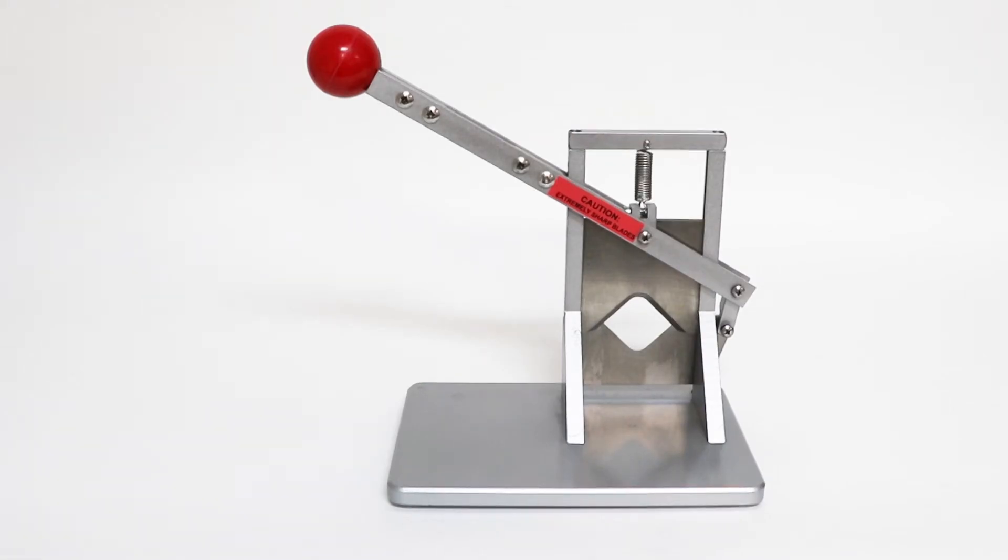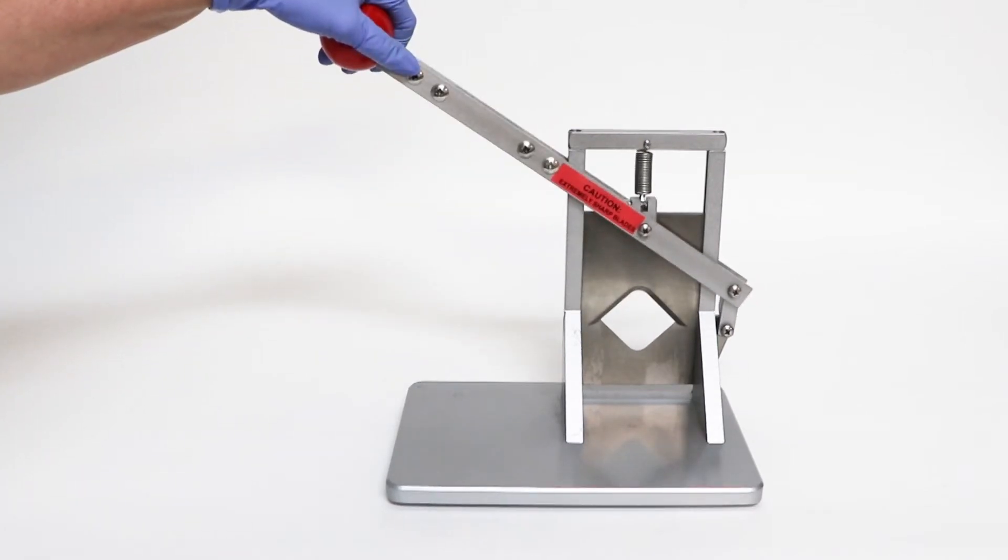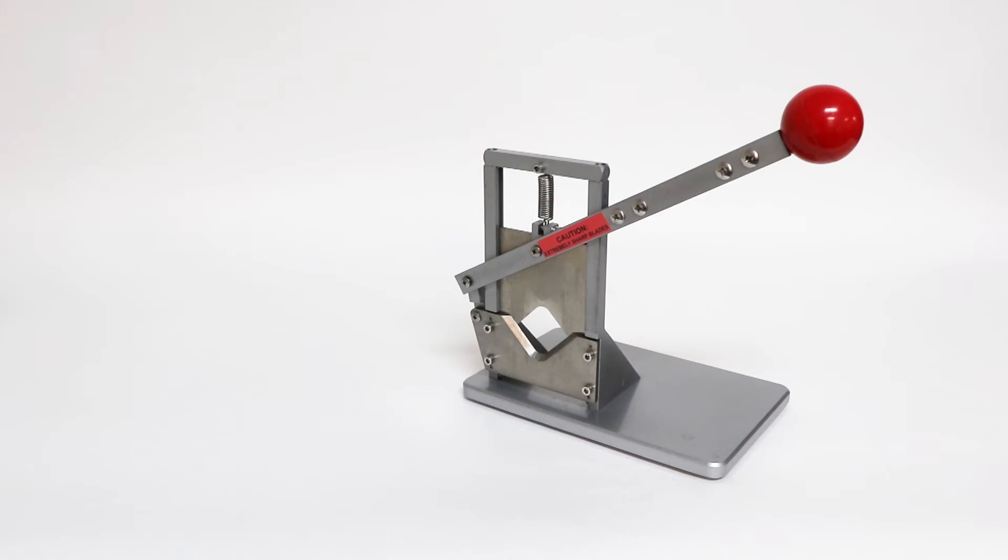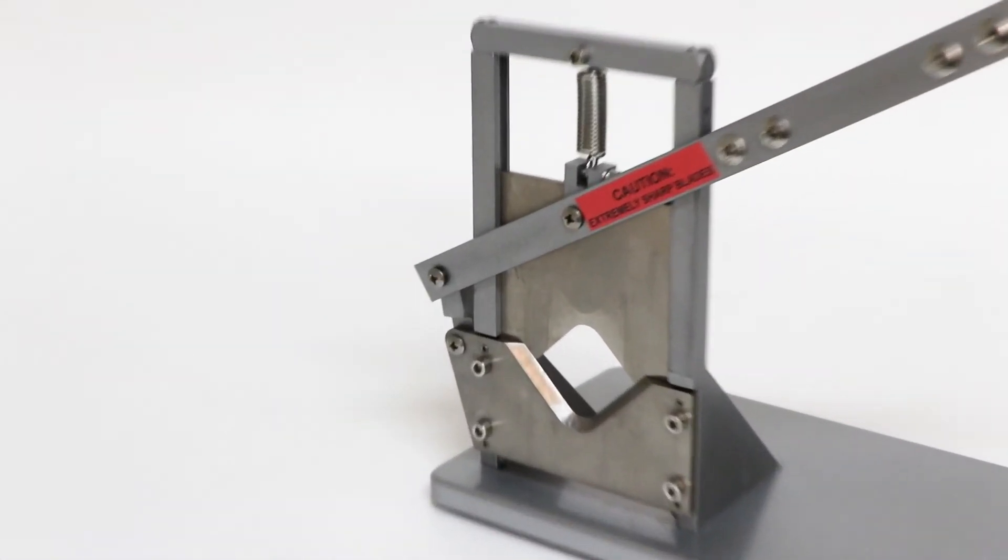The guillotine is considered one of the most humane methods of dispatching laboratory animals. With a single downward motion on the handle, you can euthanize a rodent quickly and without trauma. The blades are comprised of hardened steel so they hold an edge and remain sharp, offering years of service.